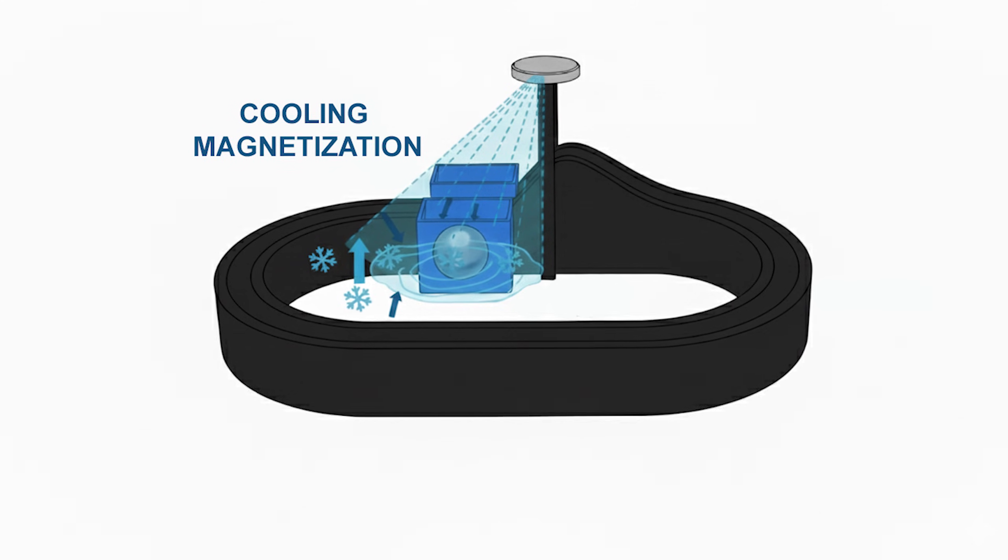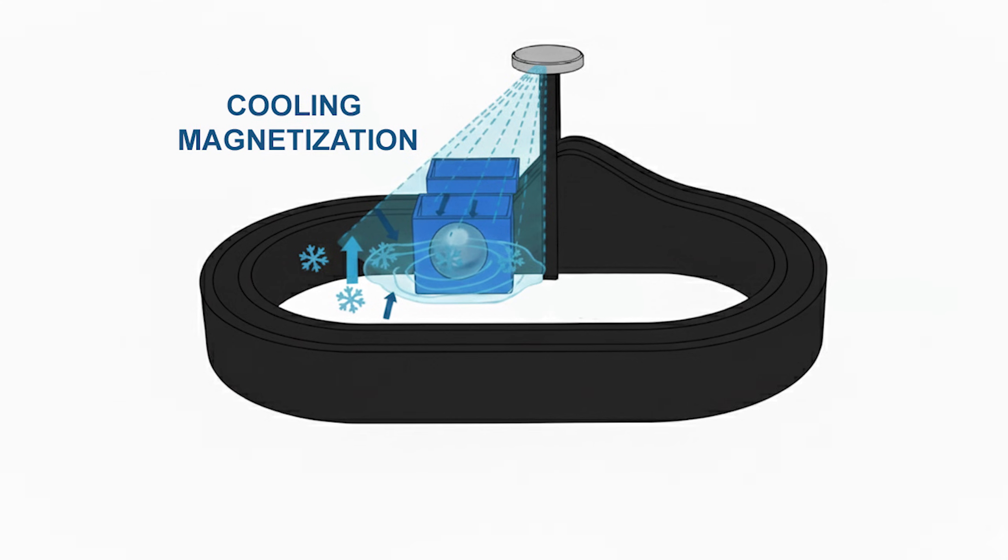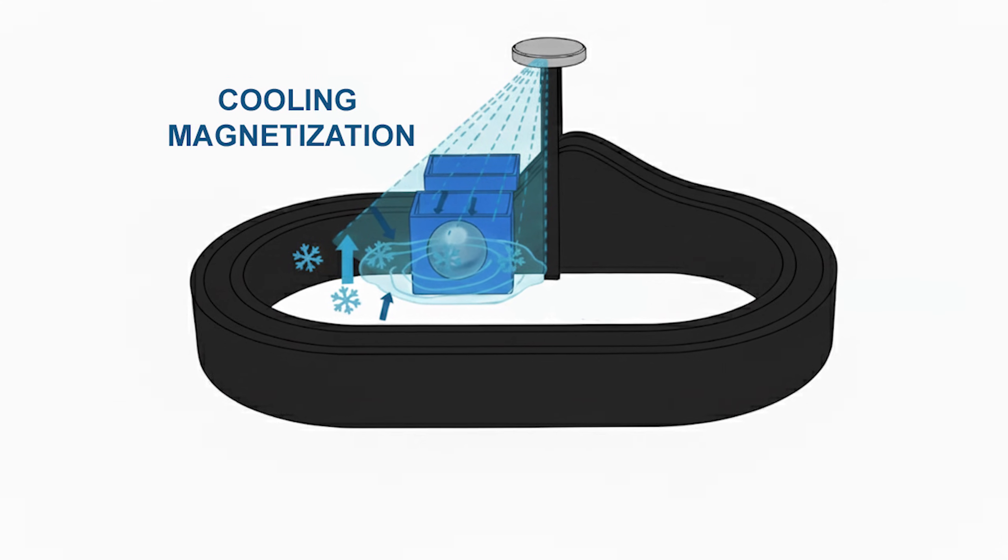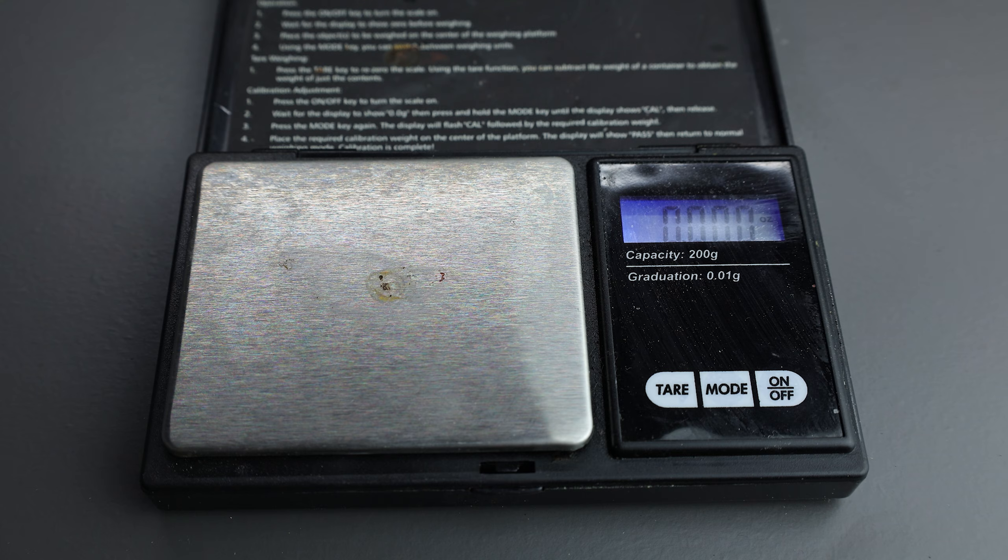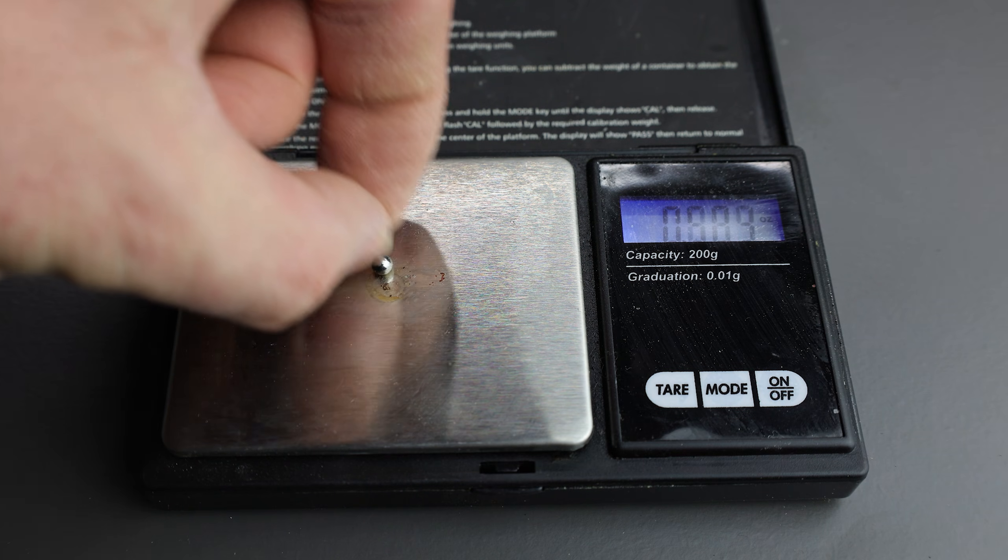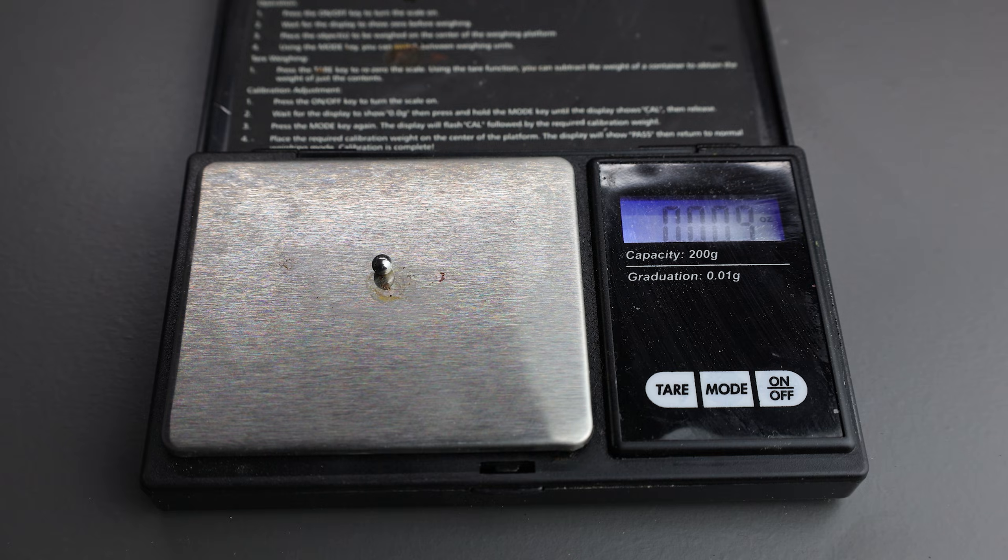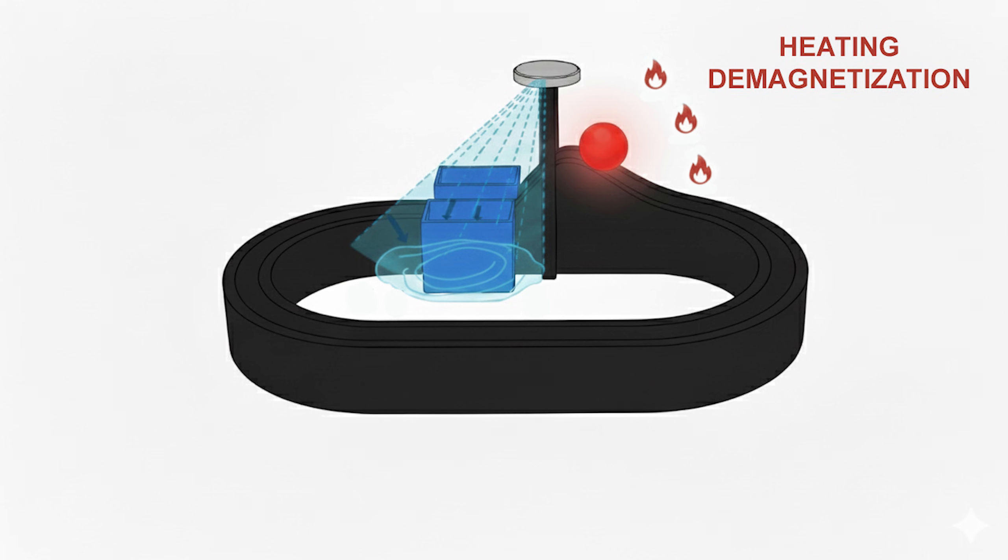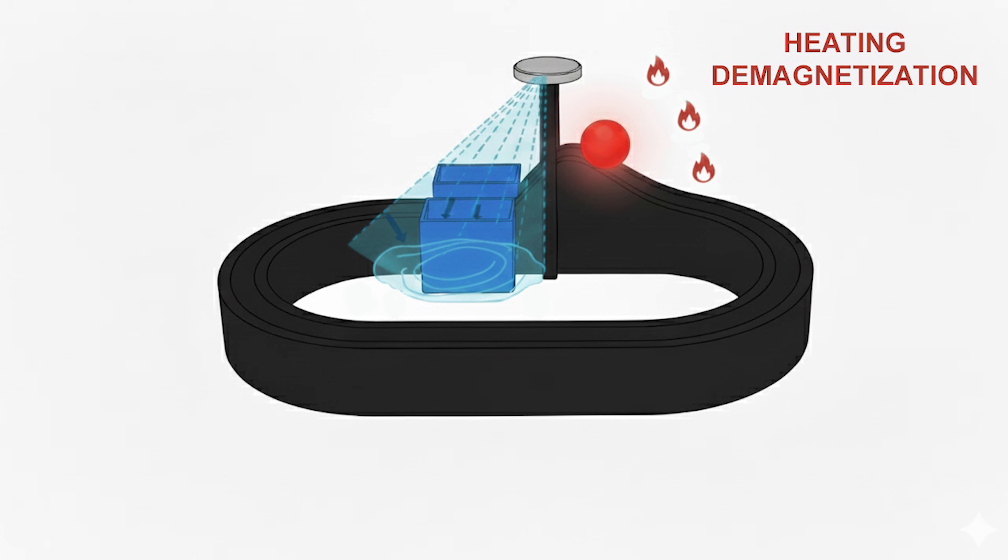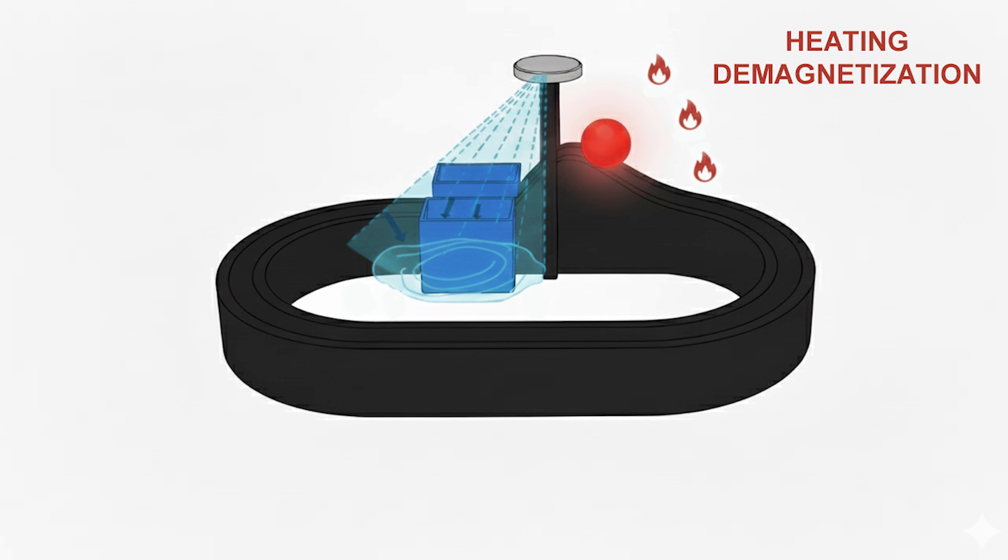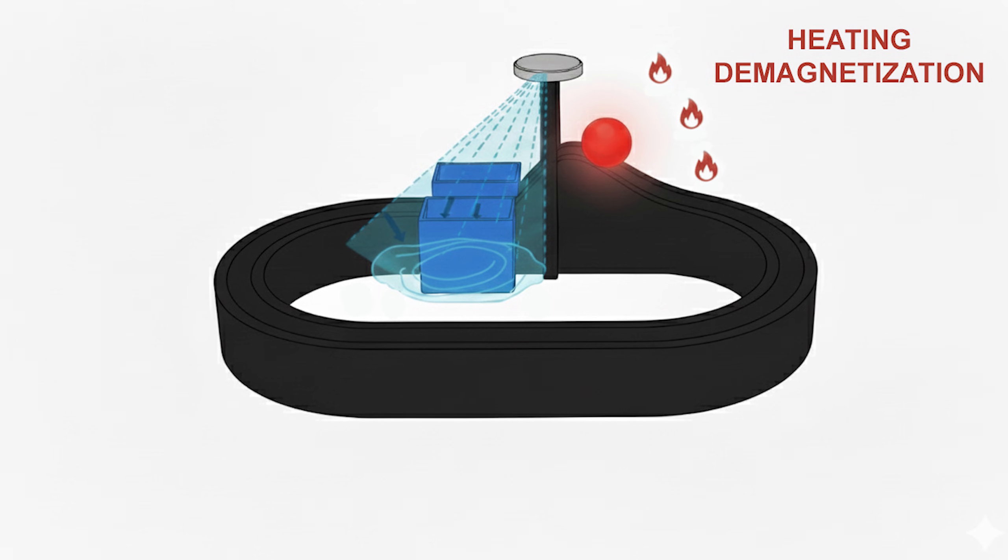But here is where the real magic of the cycle happens. As the sphere leaves the cooling zone and enters the ambient air of the room, it begins to heat up. Because the thermal mass of a 4mm sphere is so low, the convection from the warmer air floods the material with energy almost instantly. By the time the sphere reaches the apex of the curve, it crosses the Curie point once again.